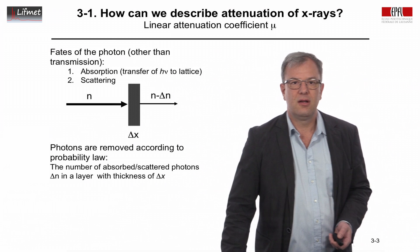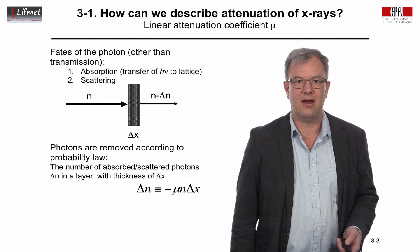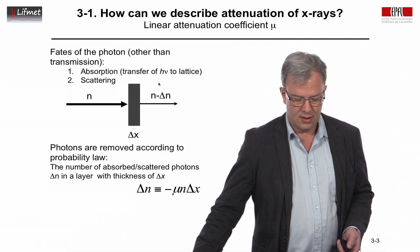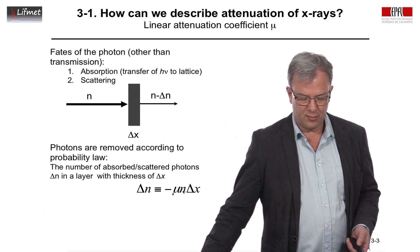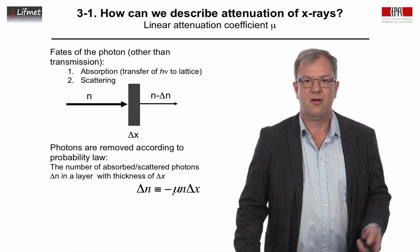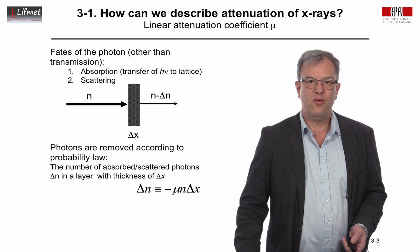Now the photons are removed according to probability law. So if we look at the number of photons that are being absorbed or scattered in a layer of thickness delta x, we'll call this number delta n. And this is given by this empirical law that the number of photons delta n, it's negative because they're being removed, is equal to, is proportional to the number of incident photons. That's the probability law. So if we have a thousand photons, we remove ten percent. We have a hundred photons removed. We have ten thousand photons with ten percent removal. We will have a thousand photons removed.